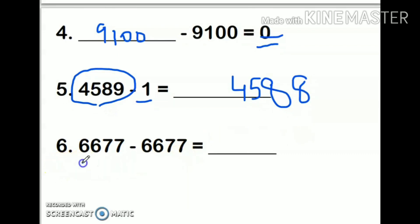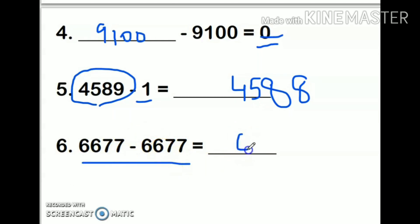Next: the same number is subtracted from itself, so the answer is 0. I hope you have understood the properties of subtraction. Bye bye!